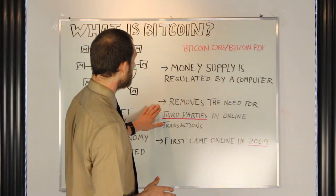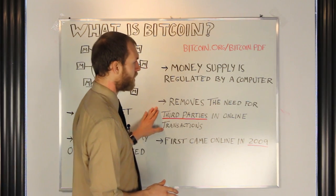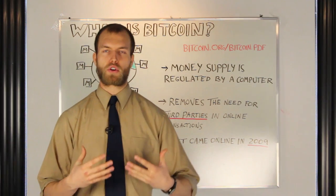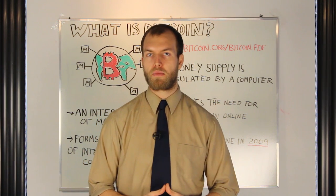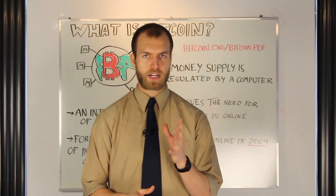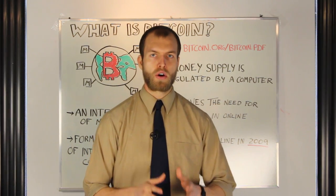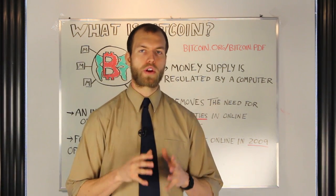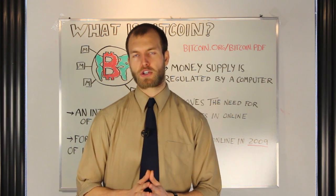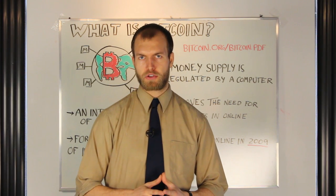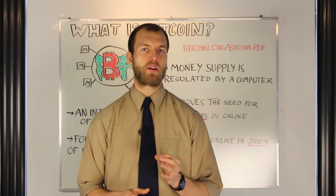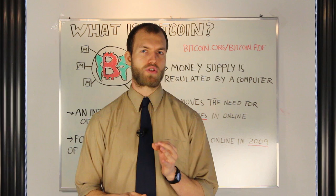One of the problems that Bitcoin solves is removing the requirement of trusted third parties in online transactions, a solution that has only come with years of research into cryptography and financial technology. More interestingly, one of the innovations that makes Bitcoin so special is that it's not regulated by central banking institutions or economists, but rather by a computer algorithm.